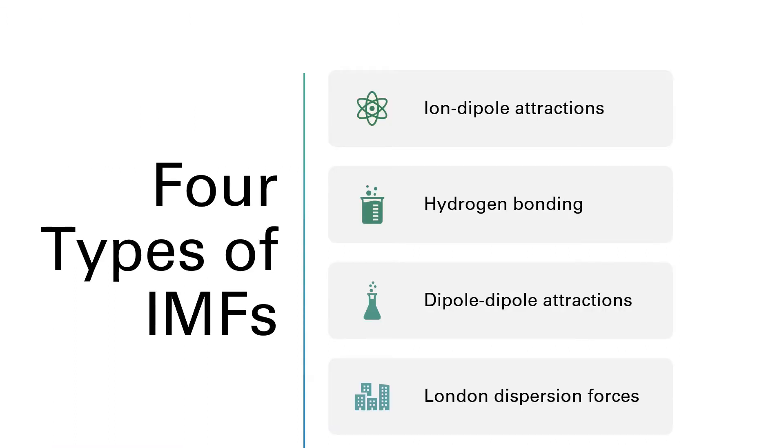There are four types of intermolecular forces. They are shown here on the slide with ion-dipole attractions, hydrogen bonding, dipole-dipole attractions, and London dispersion forces. They are shown in order of their strength. The weakest one is London dispersion forces down at the bottom, and the strongest is ion-dipole attractions up at the top.